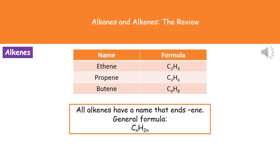The second type of hydrocarbon we're going to look at are the alkenes. All alkenes have a name ending in E-N-E, and again the first part tells us how many carbon atoms there are — so ethene has 2 carbon atoms. The general formula for alkenes is CₙH₂ₙ. So for a 3-carbon alkene, it would be C₃H₆.